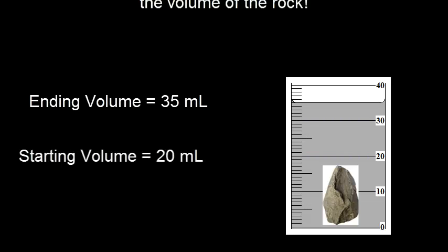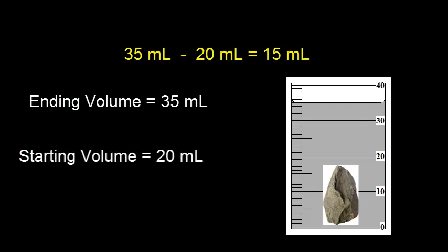Subtract the starting volume from the ending volume to find the volume of the rock. So we have 35 milliliters minus 20 milliliters equals 15 milliliters.